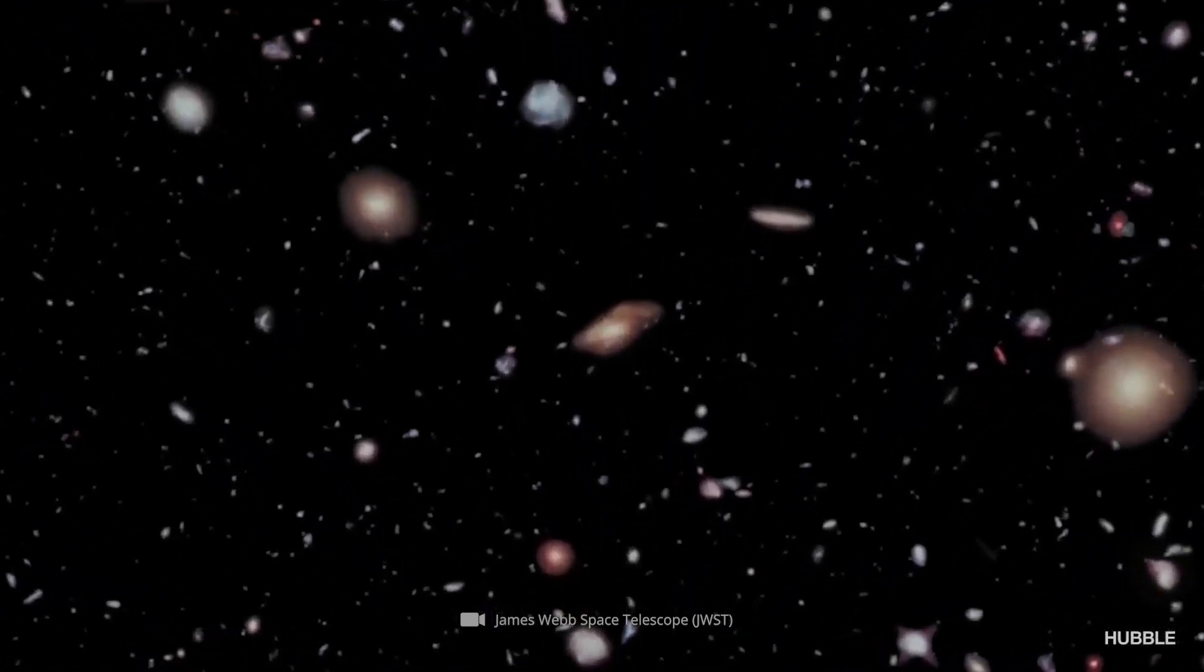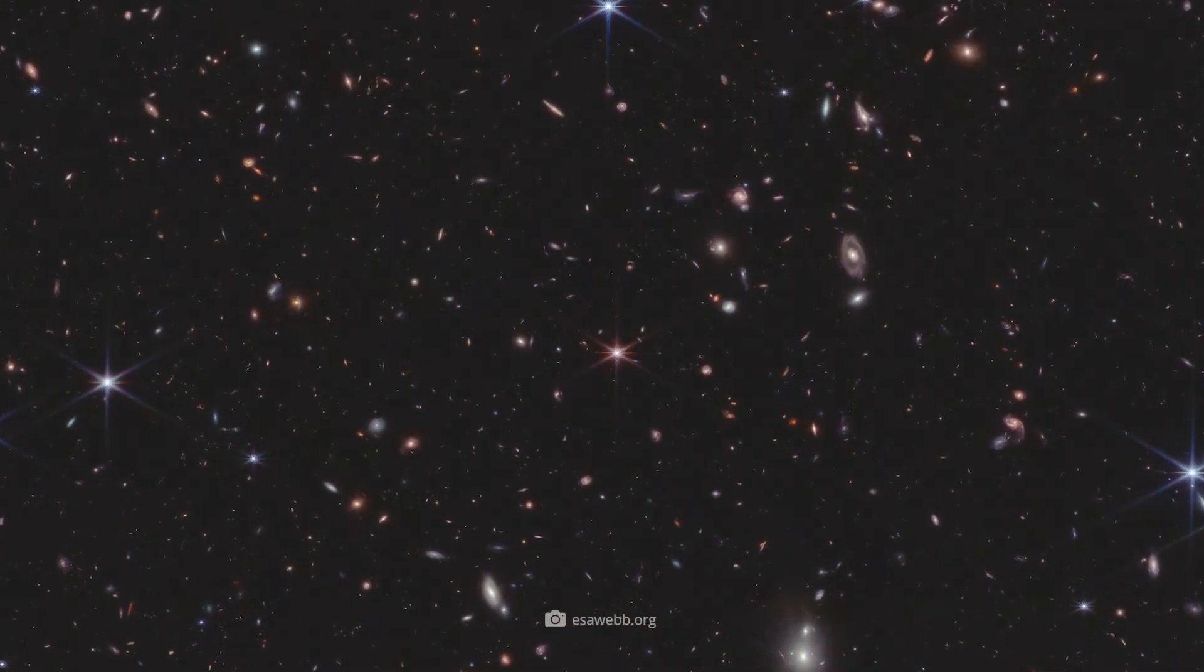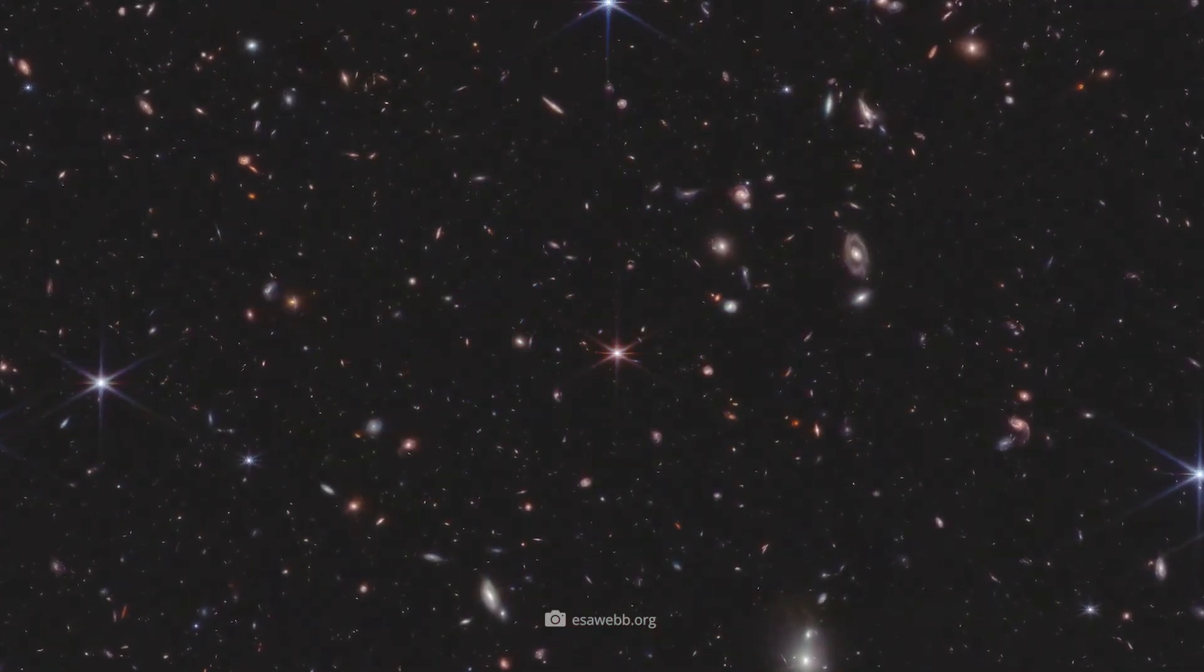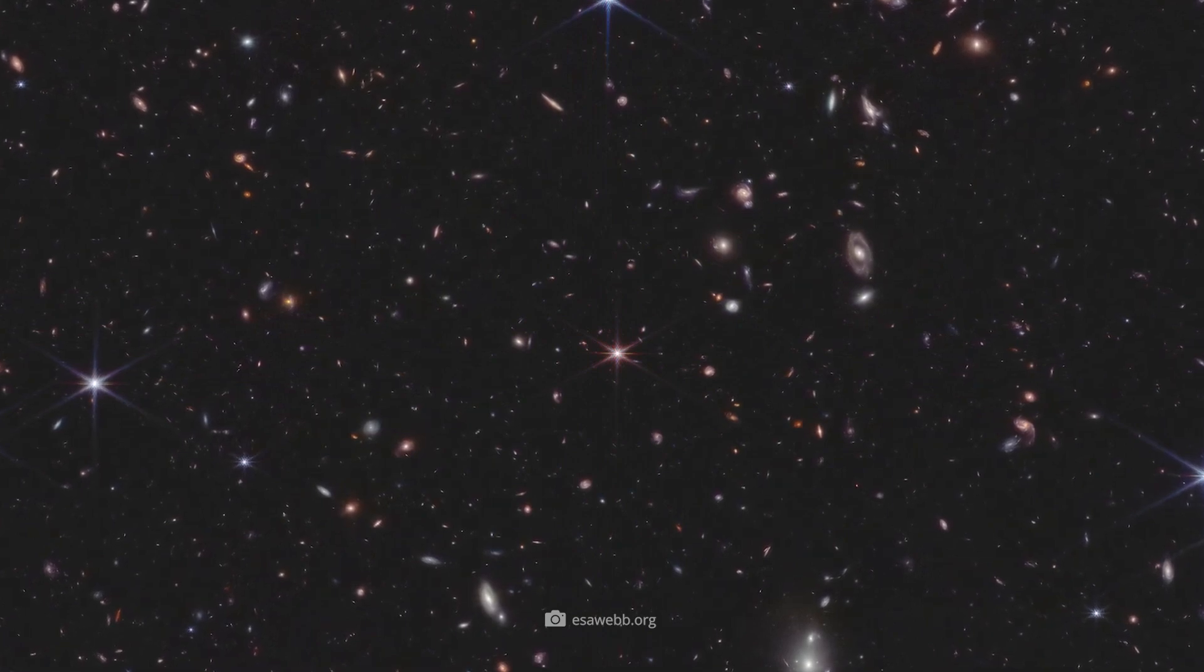This galaxy contains approximately 300 billion stars, each of which probably has its own planetary systems. Our nearest neighboring star, Alpha Centauri, is 4.3 light-years away.